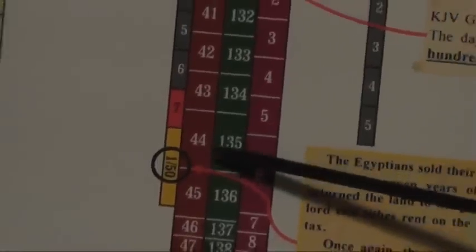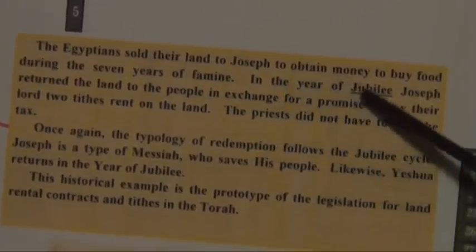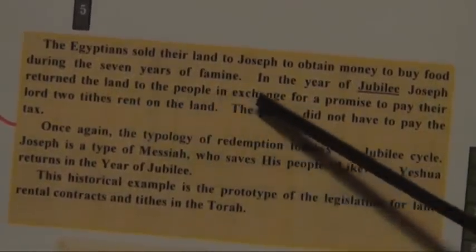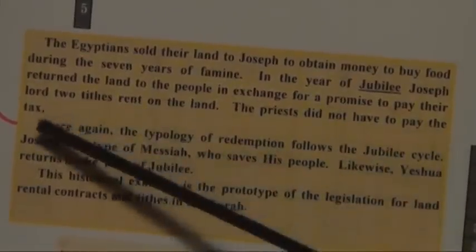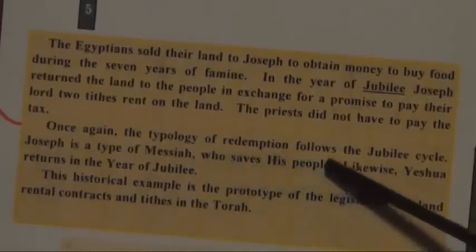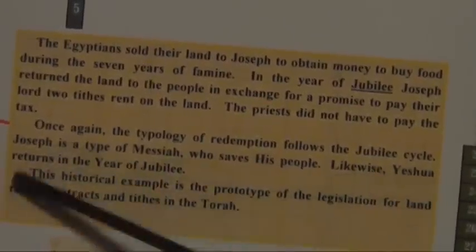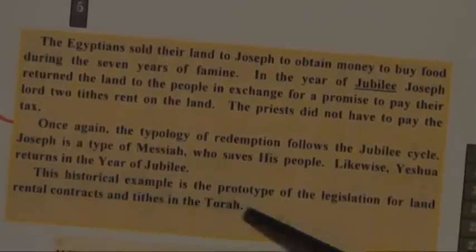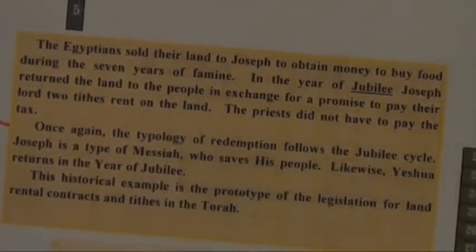Down here, in the year of Jubilee, after the seventh year of the famine, Joseph returned the land to the Egyptians. And this is what happened. The Egyptians sold their land to Joseph to obtain money to buy food during seven years of famine. In the year of Jubilee, Joseph returned the land of people in exchange for a promise to pay their Lord two tithes on the land. The priests did not have to pay the tax. Once again, the typology of redemption follows a Jubilee cycle. Joseph is a type of Messiah who saves his people. Likewise, Yeshua returns in the year of Jubilee. This historical example is a prototypical prototype of legislation for the land rental contracts and tithes in the Torah.